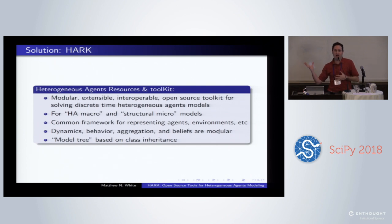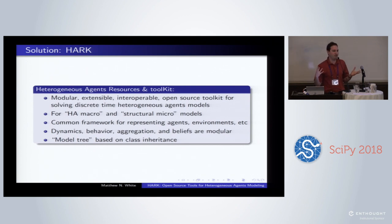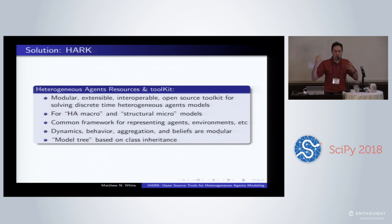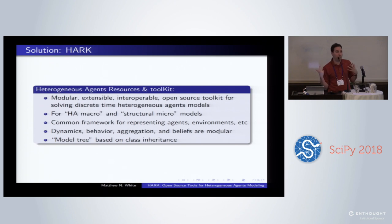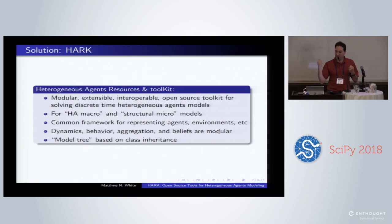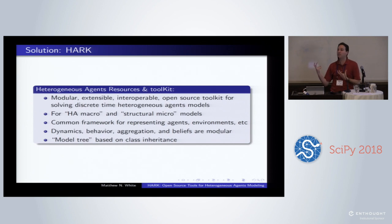The line between heterogeneous agents macro and structural microeconomics is completely non-existent, and these are camps that really should be talking to each other because they're doing the same thing with a different label. We're trying to provide a common framework — almost an API — a common platform for people to frame their models so that models are interoperable, and that elements like dynamics, behavior, aggregation, and belief formation are all separable and modular from each other, easily swappable and easily combinable.